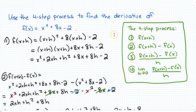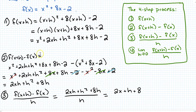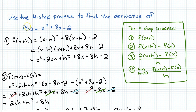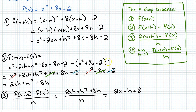Let's walk through it again quickly. Using the four-step process, we plugged x plus h in for each x in the original function, expanded everything out, and FOILed to get x squared plus 2xh plus h squared plus 8x plus 8h minus 2. For step two, I took that result and subtracted the original function, making sure to put it in parentheses so the minus sign distributes over the whole thing — subtracting x squared plus 8x minus 2.